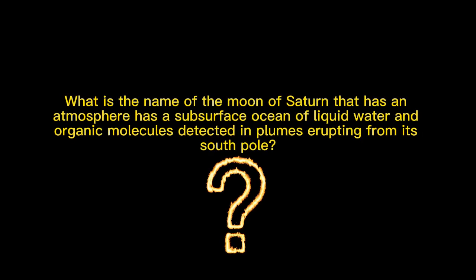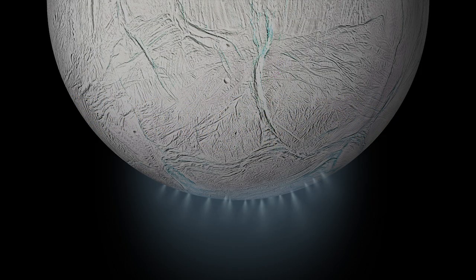What is the name of the moon of Saturn that has an atmosphere, has a subsurface ocean of liquid water, and organic molecules detected in plumes erupting from its south pole? Enceladus.